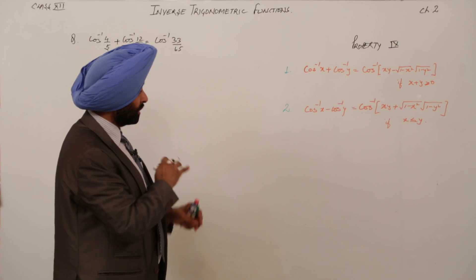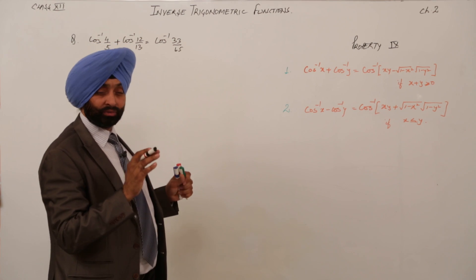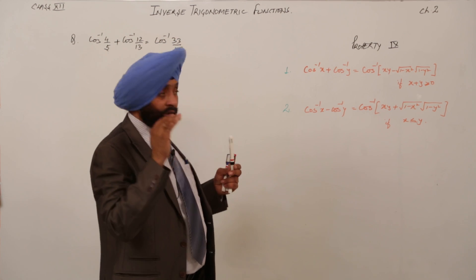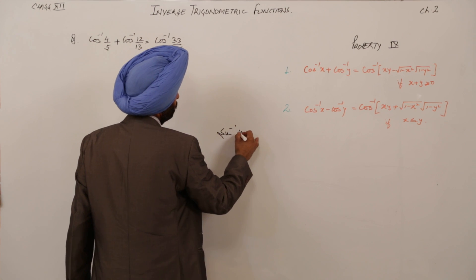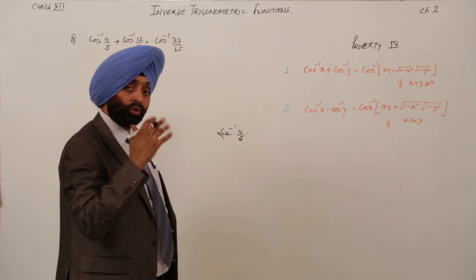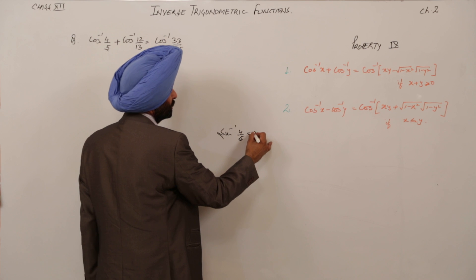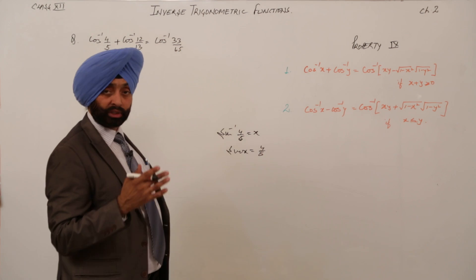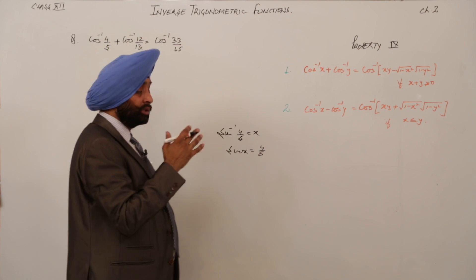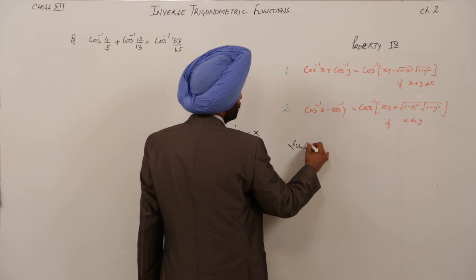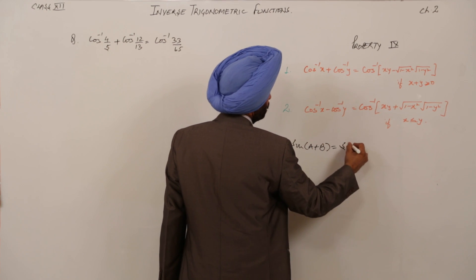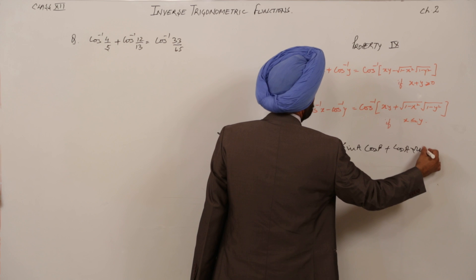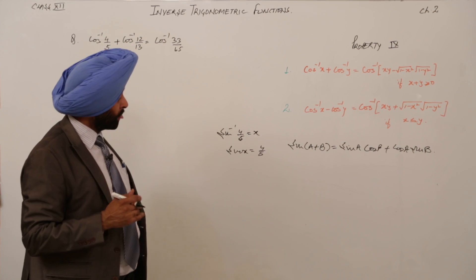This is the easiest property among all the properties — we need no extra calculation and don't need to memorize formulas. In the last property, when we had sine⁻¹(4/5), we set it equal to X, wrote sin X = 4/5, found cos X, similarly found cos Y, and then applied the formula sin(A+B) = sin A·cos B + cos A·sin B. That was the approach we used yesterday.